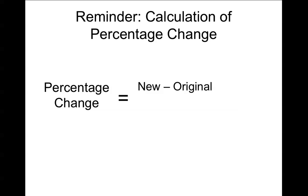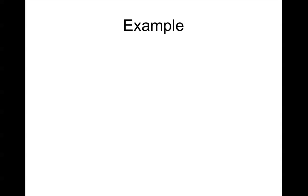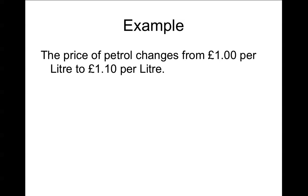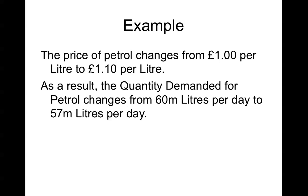We also need a reminder of how to calculate percentage change. If you have two numbers that have changed, take the new number, subtract the original, divide by the original, and multiply by 100 because it's a percentage. For the worked example: if the price of petrol changes from £1.00 per litre to £1.10 per litre, and the quantity demanded changes from 60 million litres per day to 57 million litres per day, calculate the PED coefficient.